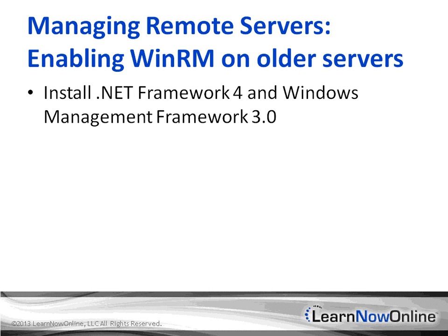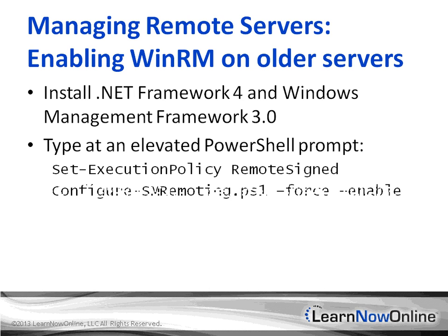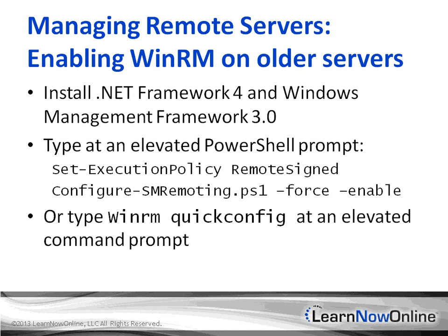For the first step — updating the Remote Management code — we need to install .NET Framework 4 and Windows Management Framework 3.0, which you can download from the Microsoft website. You definitely need to memorize these components for the exam. For the second step — enabling Remote Management on older servers — you can run two PowerShell lines: Set-ExecutionPolicy RemoteSigned, and Configure-SMremoting.ps1 -force -enable. There's also an easier option: type WinRM quickconfig at an elevated command prompt.